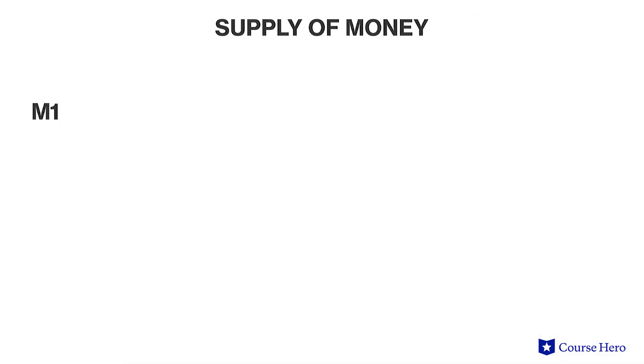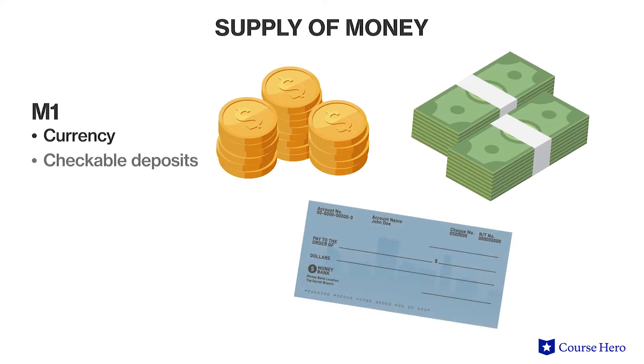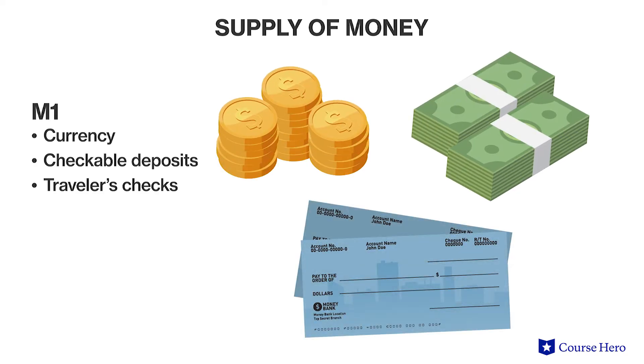The Fed uses two definitions of the money supply to measure the amount of money in the economy. M1 contains the most liquid forms of monetary assets: currency, checkable deposits, and traveler's checks. These are the forms of money most often used as a medium of exchange, and most stores accept any of these three methods for payment.